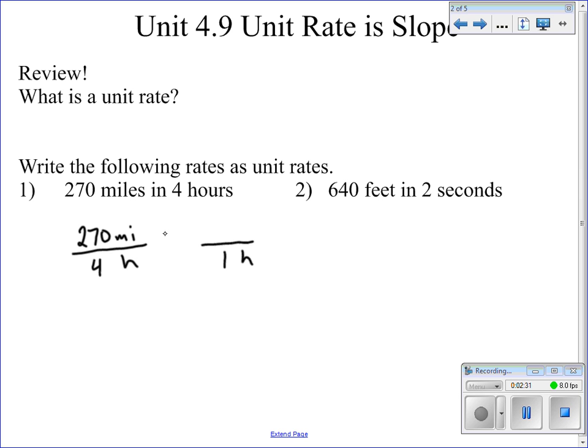So we've got to ask ourselves, if there's four hours and we need to get it down to one hour, what are we doing to be able to get down to this? We need to split it into four different groups, and the way we do that is we divide by four. So by taking four divided by four, we get one hour. Then we take 270 divided by four, and we get 67.5 miles.